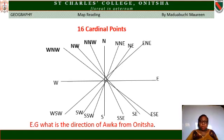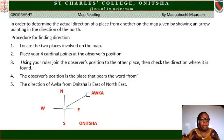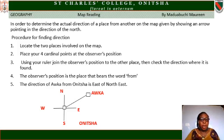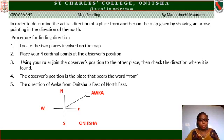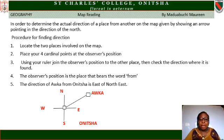Let us now find the direction of Oka from Onitsha. To determine the actual direction of a place from another on a map, the map shows an arrow pointing in the direction of north. Procedure: locate the two places — Oka and Onitsha. Place your four cardinal points at the observer's position, which is Onitsha. Use your ruler to join the observer's position to the other place, then check the direction where it falls. The direction of Oka is East of Northeast.